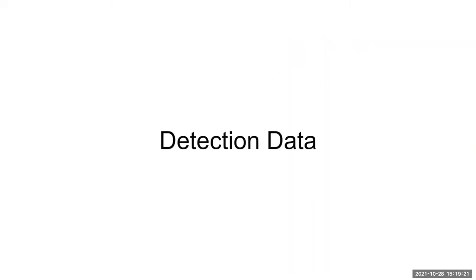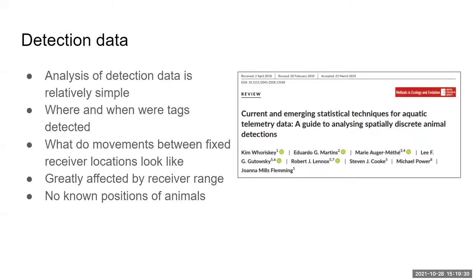Detection data is the most basic form of telemetry data from acoustic receivers. We know the receiver location; when a fish is detected there, the fish was most likely within a certain range of that receiver. Kim Wariski published a fantastic review on analyzing detection data with telemetry — it's quite different from having paths. You can only draw lines and networks between receivers when you don't have a precise position; you only know generally where the fish was, within range of a receiver.